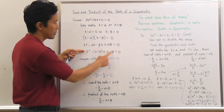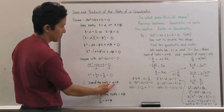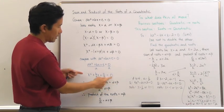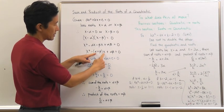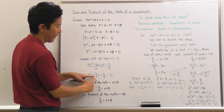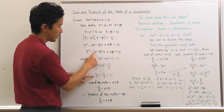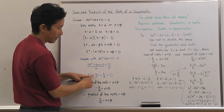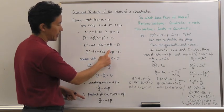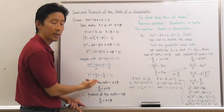Now I can very easily compare these two equivalent equations. If I take a look at the sum of the roots — alpha plus beta — that's associated with the coefficient of x. The coefficient of x here is b/a. The only difference is that one is negative and the other is positive, so the sum of the roots alpha plus beta is actually going to be equal to the opposite of b/a. In the same respect, the product of the roots, which corresponds to the constant term, is going to be exactly equal to c/a.